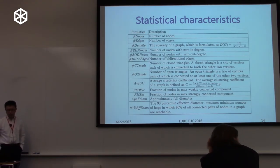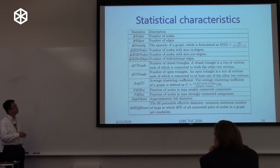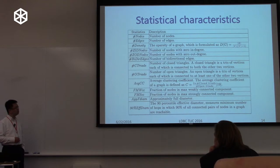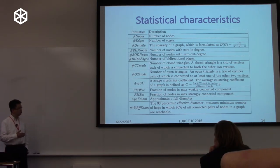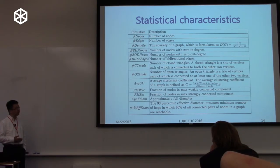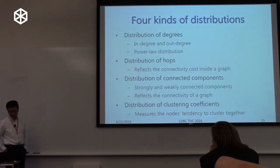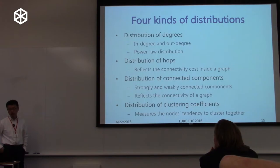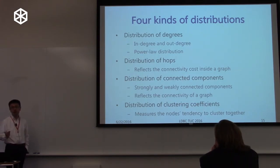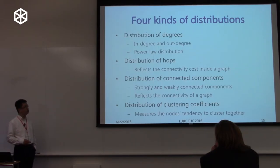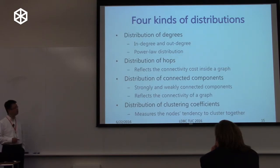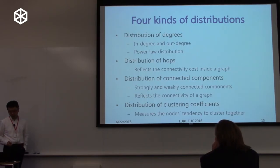We listed several statistical characteristics — some common ones like number of nodes, number of edges, and density — and also calculated the number of children, size of connected components, and four different data distributions: distribution of degrees, distribution of hops between randomly picked pairs of nodes, distribution of connected components over node degree, and clustering coefficients.